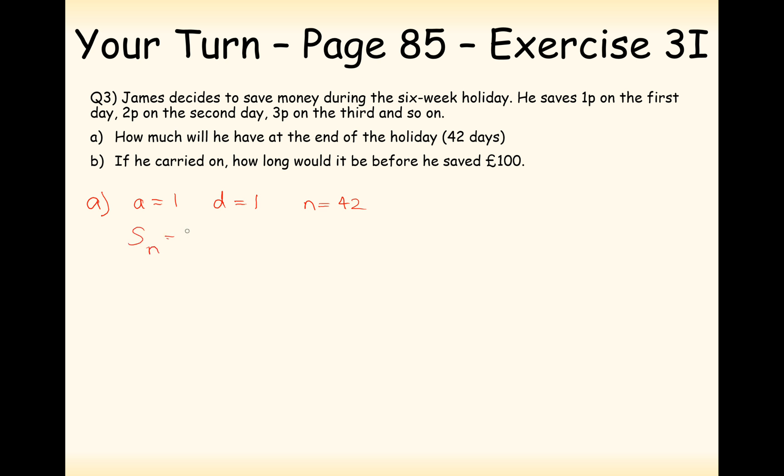In this case we're going to use the arithmetic summation formula. So it's going to be n over 2 times 2a plus n minus 1 lots of d. So in this case it's going to be 42 divided by 2 times by 2 plus 41 lots of 1. So it's going to be 21 times by 43. Grab your calculator and calculate it. 43 times 21, and that gives you 903 pence. Or in other words, 9 pounds and 3p. Not very much James, unfortunately.